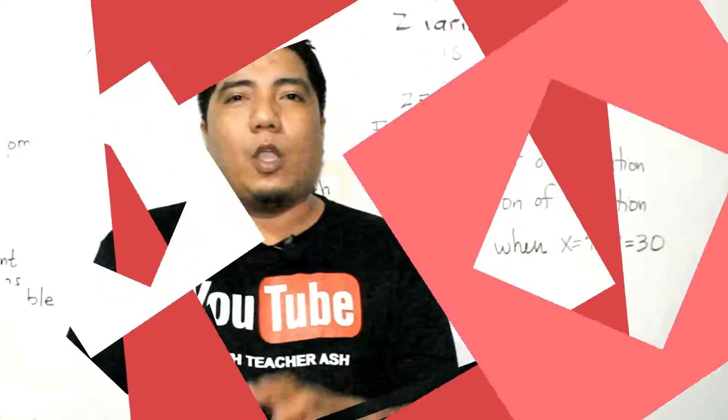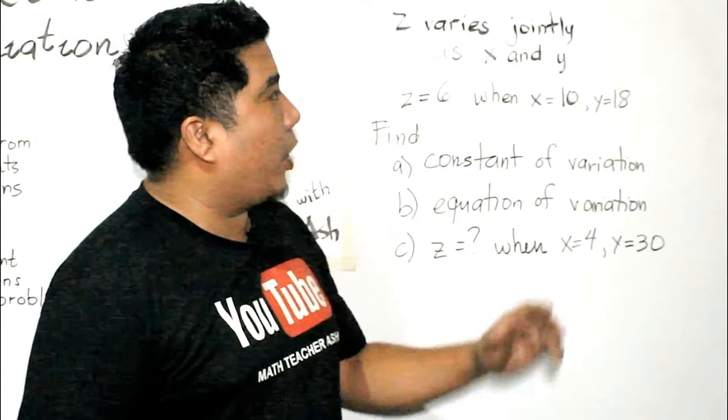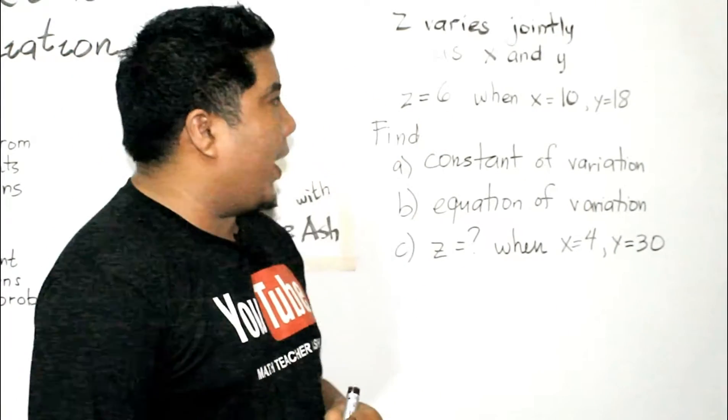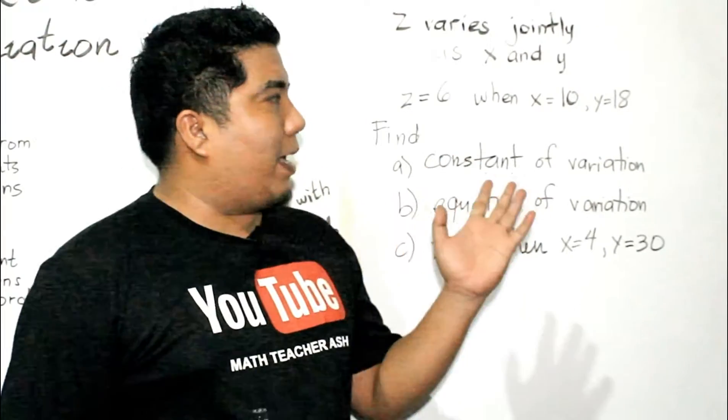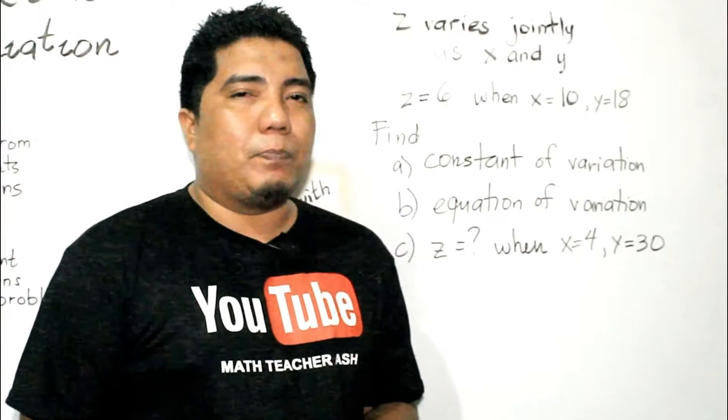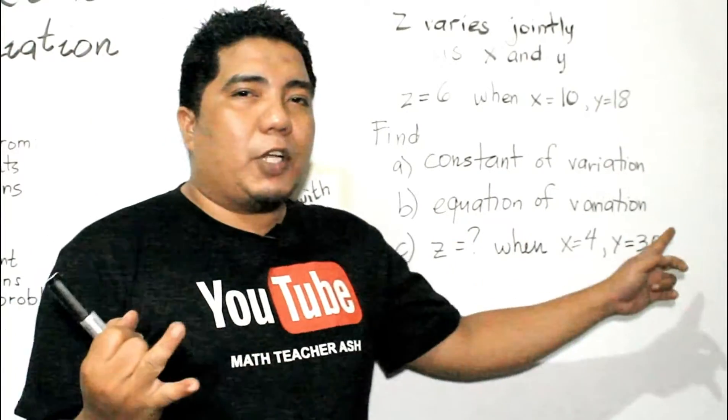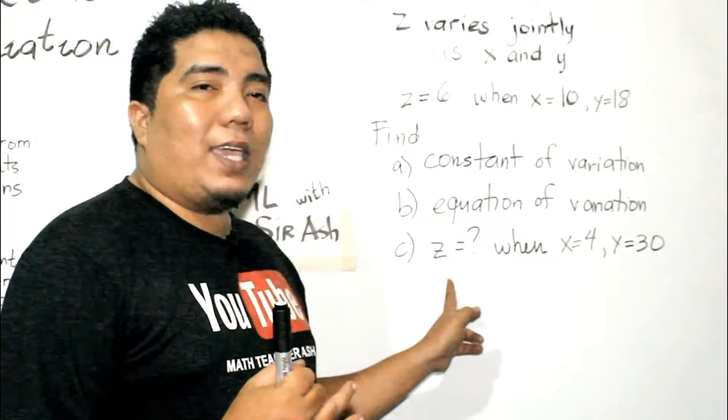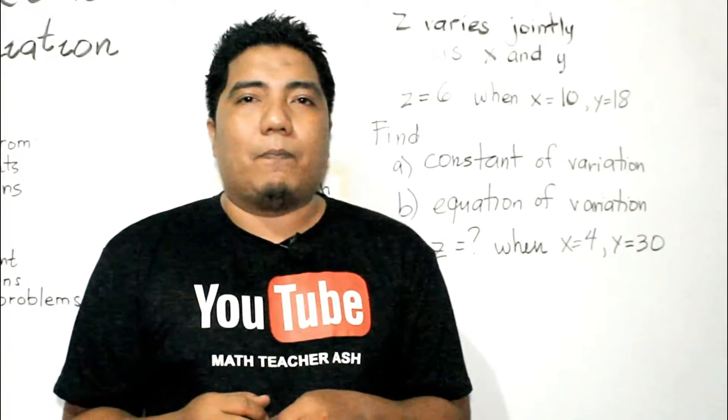So, let's consider an example. Okay, math learners, we have an example here. Z varies jointly as x and y. Z is 6 when x is equal to 10 and y is equal to 18. Find the constant of variation, the equation of variation, and what is z when your x is equal to 4 and your y is equal to 30.